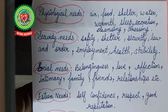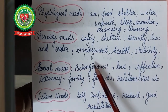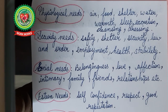Organizations help their staff satisfy physiological needs by providing best pay and comfortable working conditions. The next set of needs is safety needs or security needs, which include safety, shelter, security, law and order, employment, health, and stability. Once physiological needs are gratified, the safety or security needs become predominant. These needs are essentially about being free of physical danger and deprivation of the basic physiological needs.